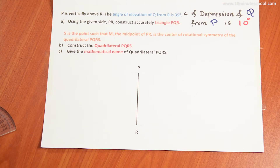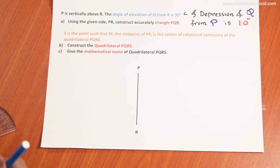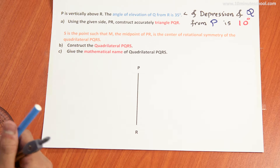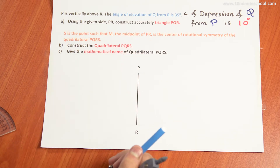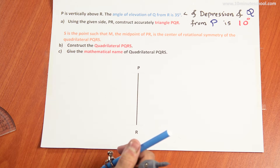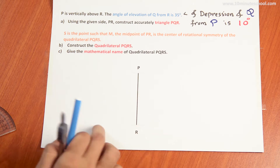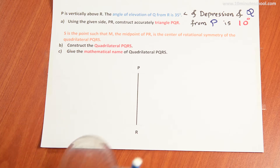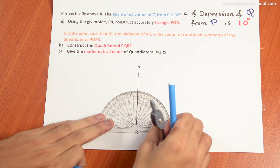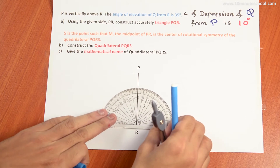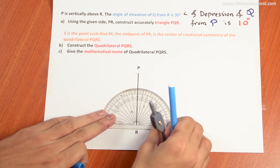We will solve a question related to angle of elevation, angle of depression, and rotational symmetry. P is vertically above R. The angle of elevation of Q from R is 35 degrees. So we consider 35 degrees here.